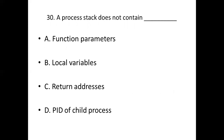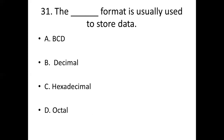Thirtieth bit: A process stack does not contain. Option A: Function parameters. Option B: Local variables. Option C: Return addresses. Option D: PID of child process. Answer: Option D, PID of child process.